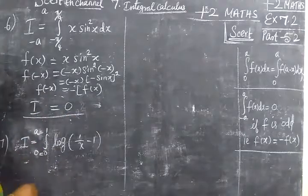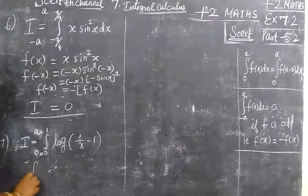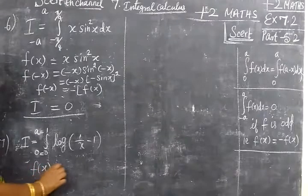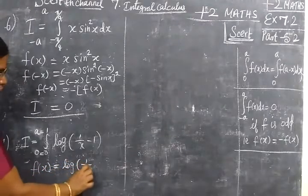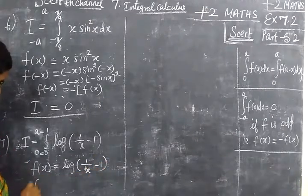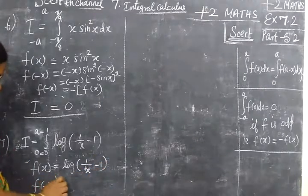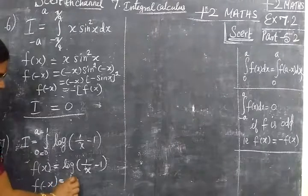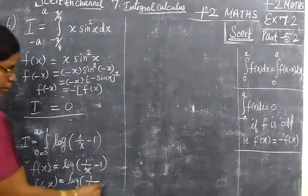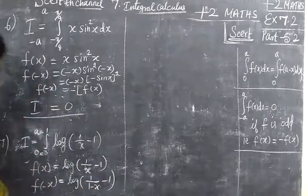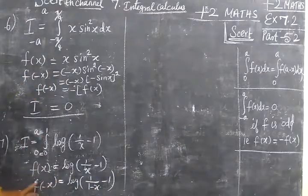Now come to the second, seventh one. Here also, you take and write f(x). f(x) equals log of (1/x) minus 1. f of minus x equals log of 1/(1 minus x) minus 1. So here you are writing.